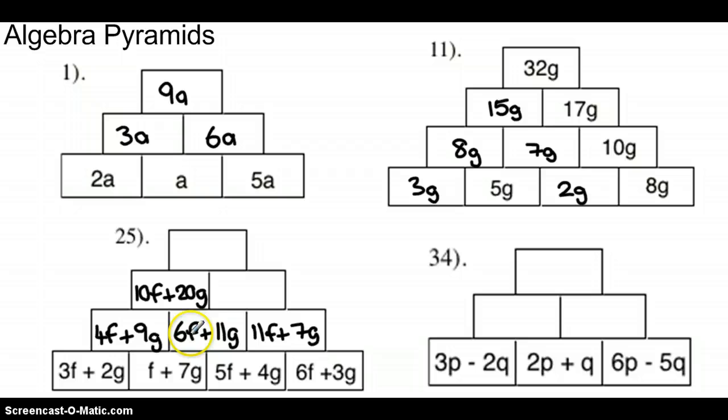Moving on to the right-hand side, we've got 6f and 11f, 17f, and then you'll see you've got 11 and 7 to make 18g. And finally we add those all together, we've got 27f and 38g.